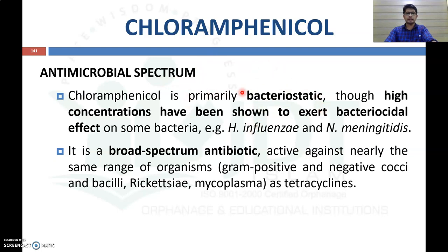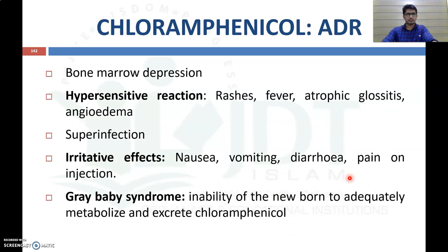Chloramphenicol is primarily bacteriostatic, but at higher concentrations it produces a bactericidal effect on some bacteria such as Haemophilus influenzae and Neisseria meningitidis. It is a broad spectrum antibiotic active against nearly all microorganisms — gram positive, gram negative, cocci, and Rickettsia — similar in spectrum to tetracycline.